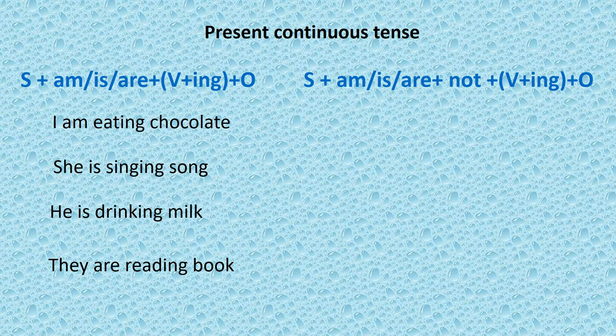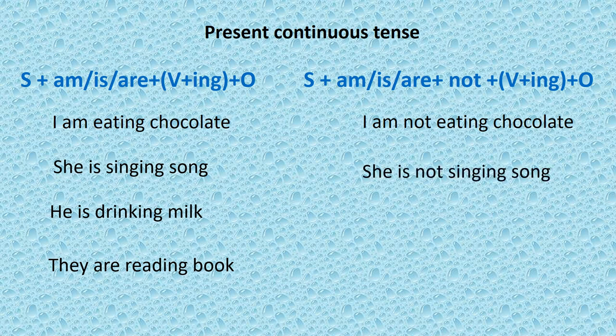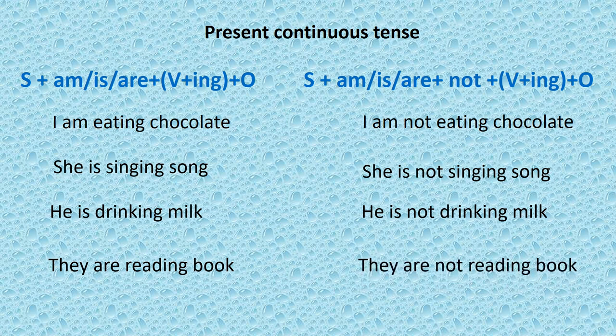For negative sentences: subject + am/is/are + not + verb with -ing + object. I am not eating chocolate. Main chocolate nahi kha raha hun. She is not singing song. Wah gana nahi ga rahi hai. He is not drinking milk. They are not reading book. Woh pustak nahi pad rahe hai.